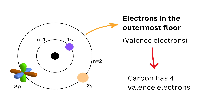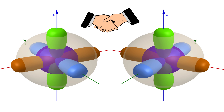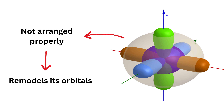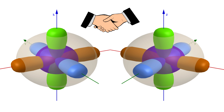When an atom wants to form bonds — that is, make friends with other atoms — it may find that its orbitals are not arranged in the best possible directions. So to make better connections, the atom remodels its orbitals by mixing them. This process of mixing orbitals to form new ones is called hybridization. It's not like the atom consciously chooses to do it; hybridization is really our way of explaining what happens inside the atom as it prepares to bond.